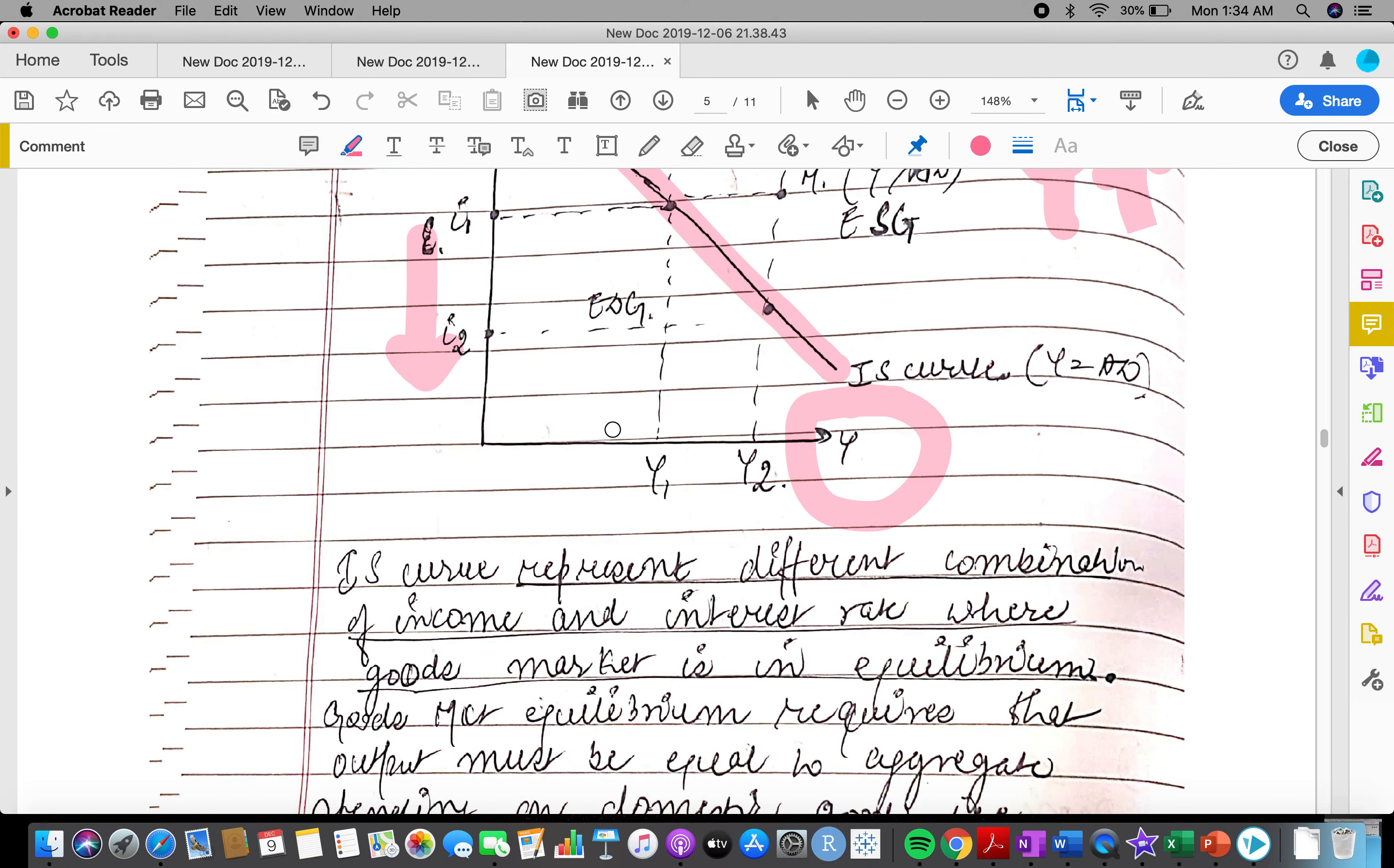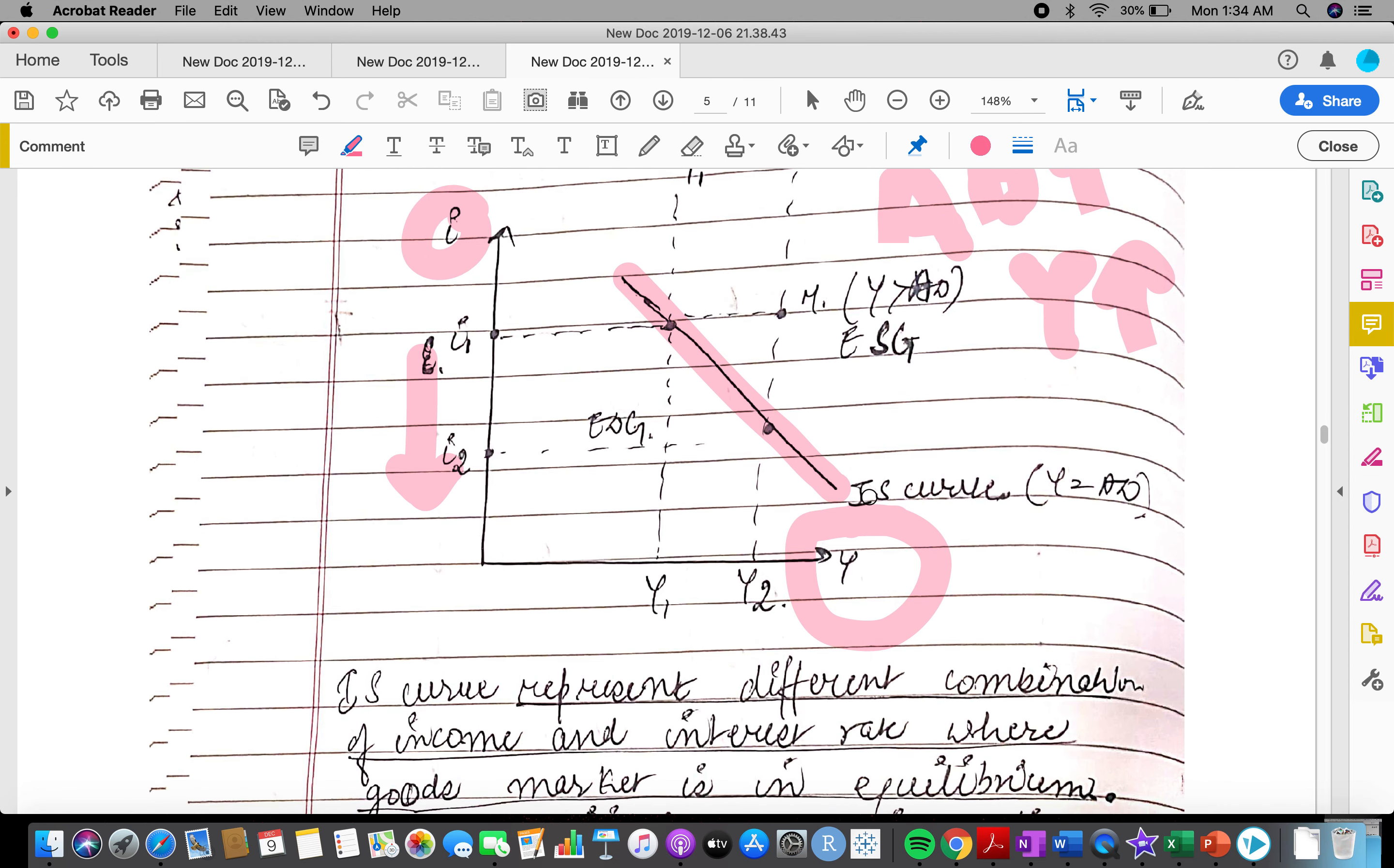IS curve basically represents different combinations of income and interest rate where goods market is in equilibrium. So on this line, goods market is always in equilibrium.